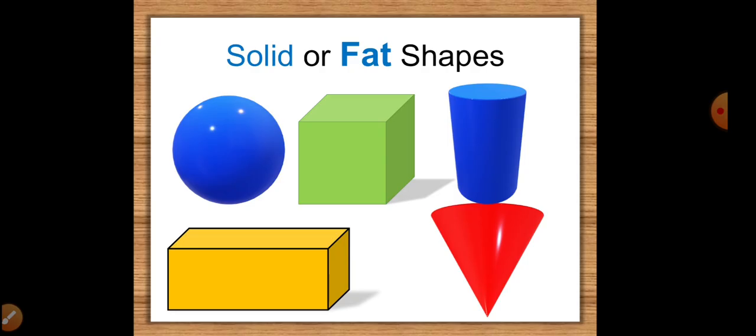called three-dimensional or 3D shapes. You can hold them in your hand. You can stack them up high like a tower. Some you can roll around or slide across the table. When you are looking in a book for solid shapes, you look for a shadow or where light is shining on the shape.